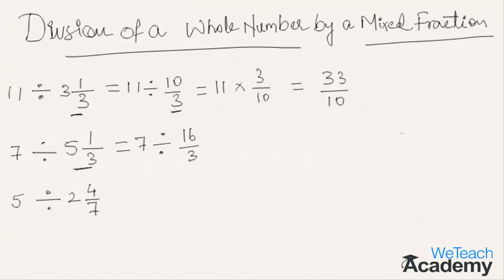Now, this equals 7 multiplied by the reciprocal of 16 by 3, that is 3 by 16. So, 7 3's are 21 by 16. Hence, 21 by 16 is the result of 7 divided by 5 and 1 by 3.